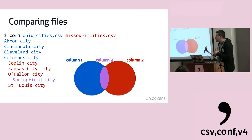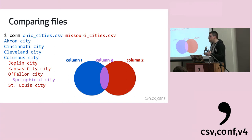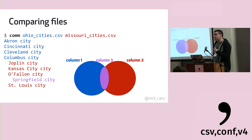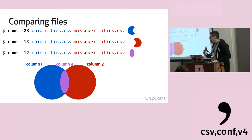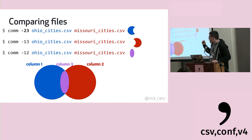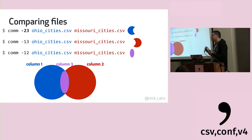'comm' is an interesting way to compare files. It produces three columns: lines only in the first file, lines only in the second file, and lines in both files — useful for diffing operations. It's a bit weird in that you pass it a column number to suppress that column's output. So to show only shared lines, you pass 2 and 3 to suppress those columns. Think of it like a Venn diagram.